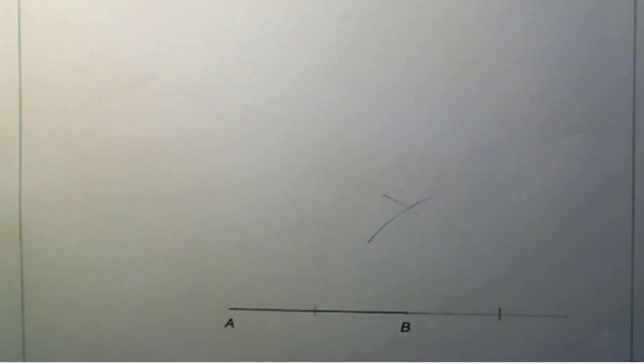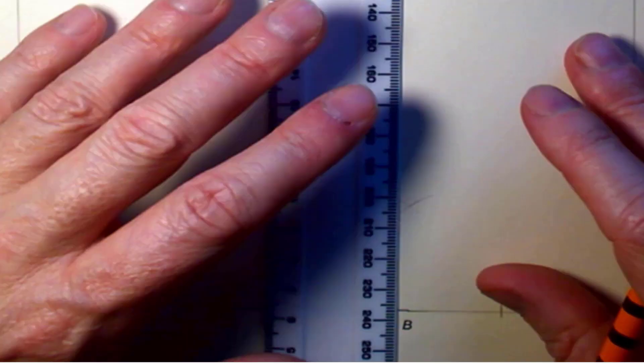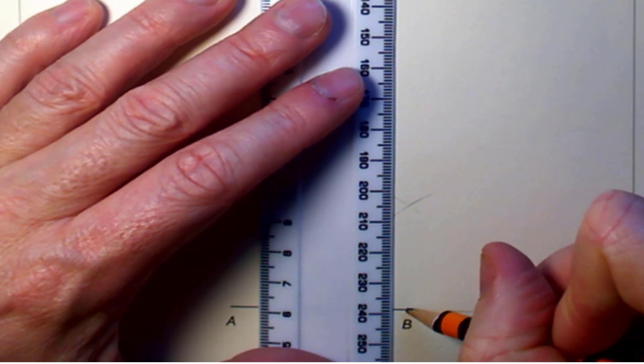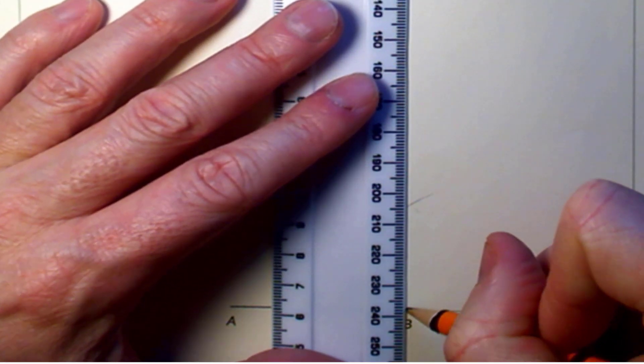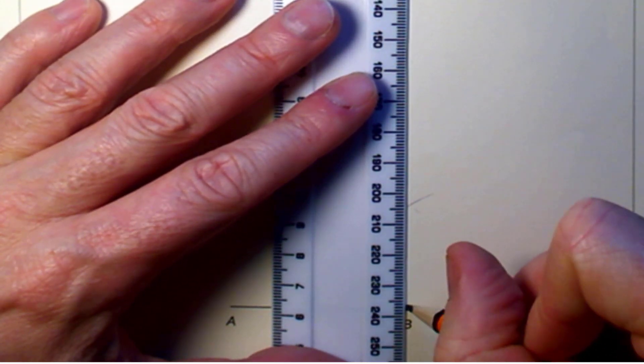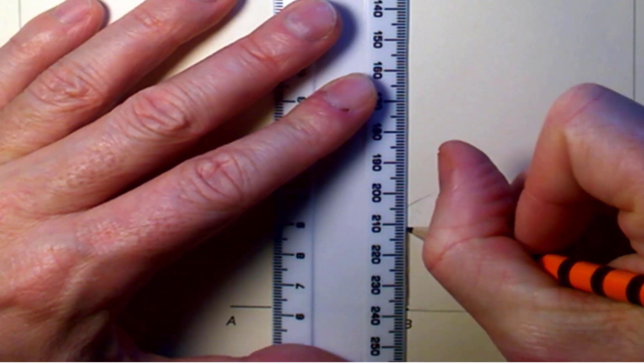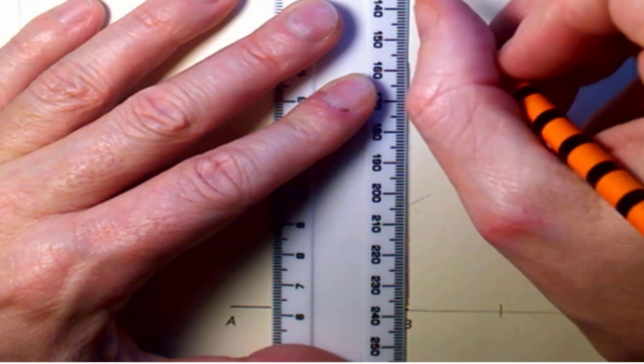and draw a second arc so it crosses your first. You can now draw a line from B going up and this line will be 90 degrees from the line AB. There we go.